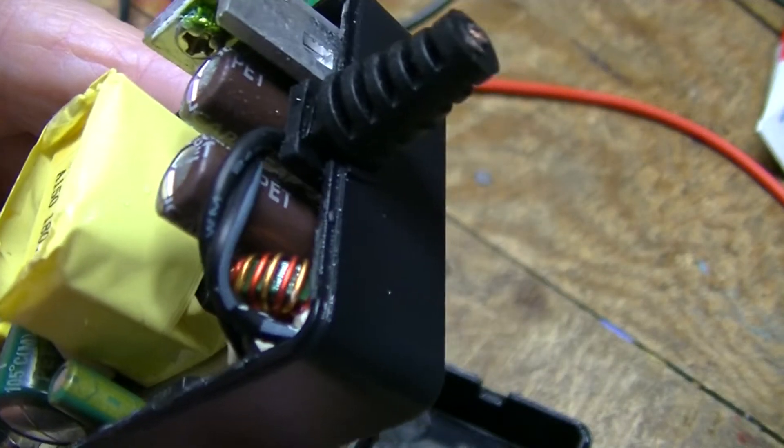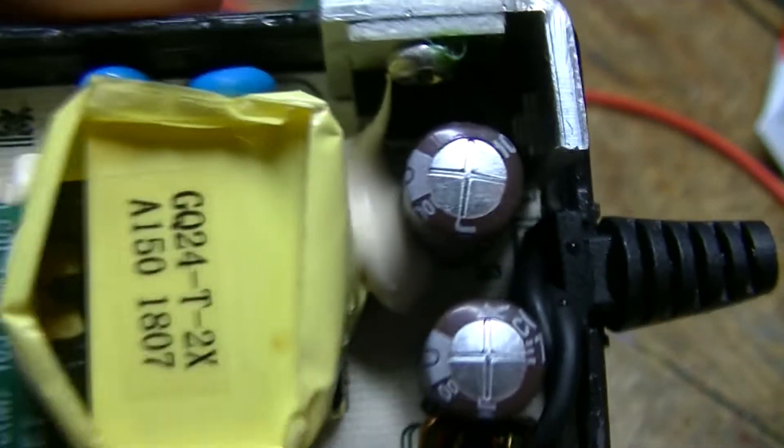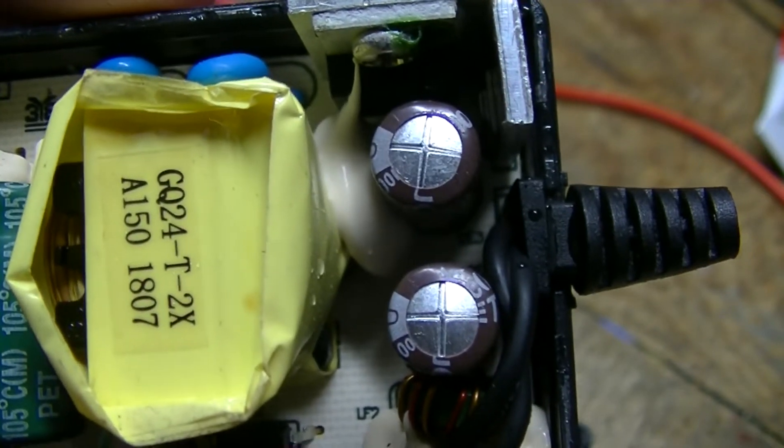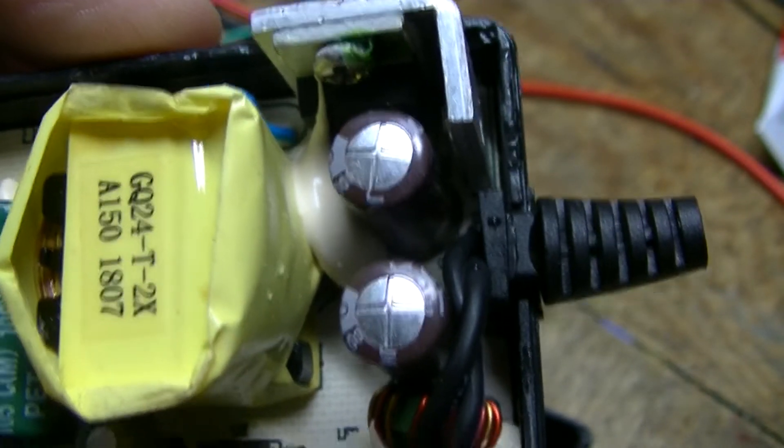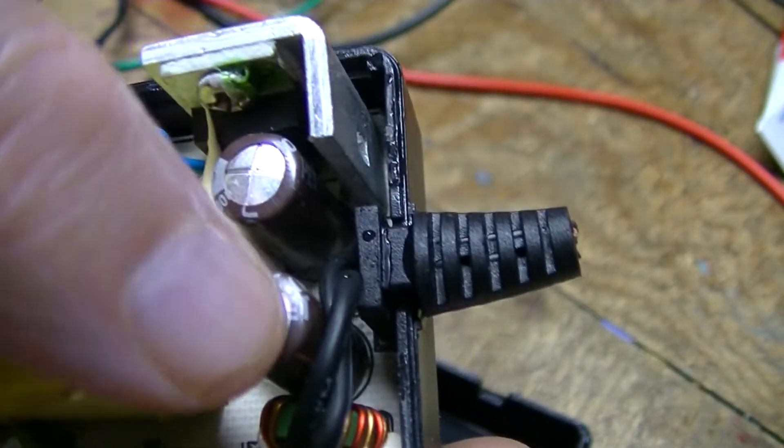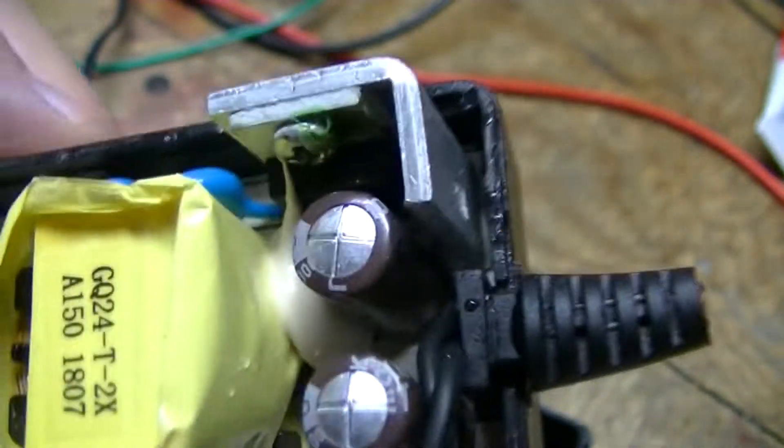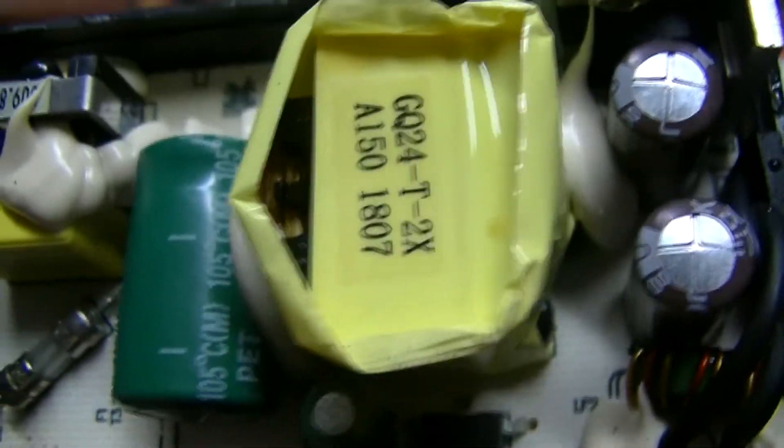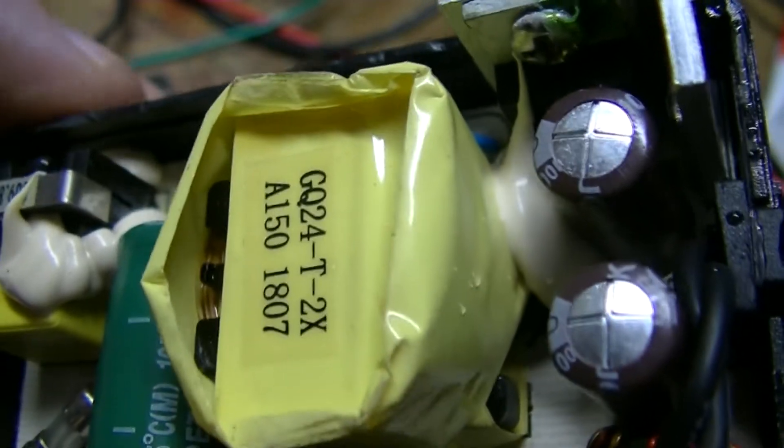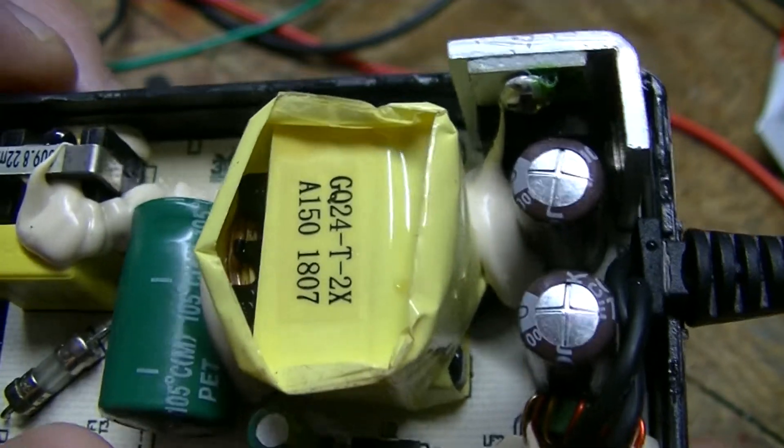These two caps here. Sorry, I can't find my pointer. Fingers were invented before pointers. See these two caps right here? They look bulged. But that's too small for me to work on. And then there's a main one here. Not much to this. It's hard to believe that this thing is capable of putting out two and a half amps. It really is hard to believe.